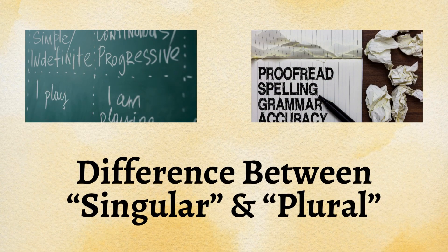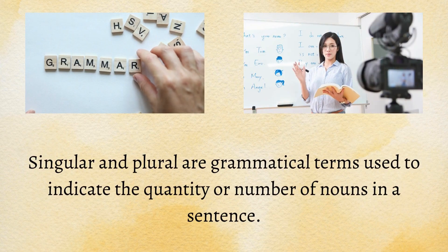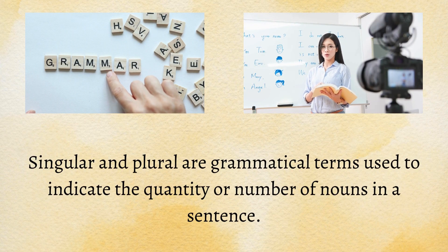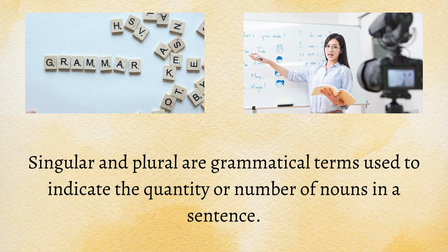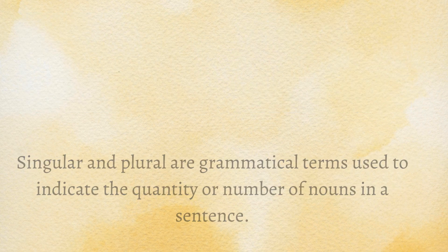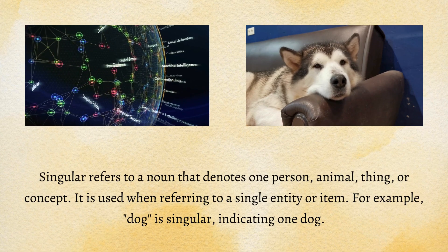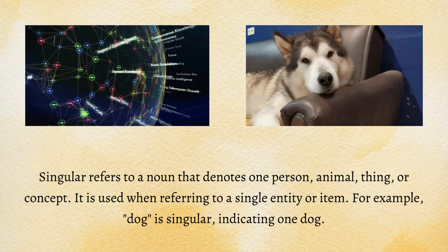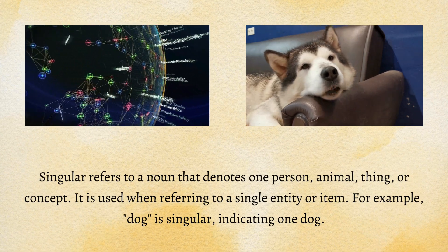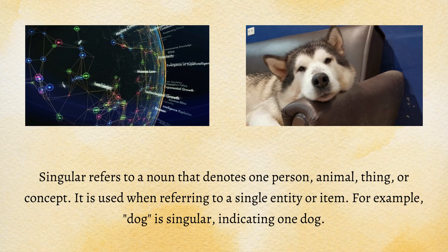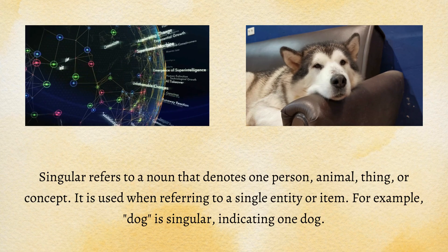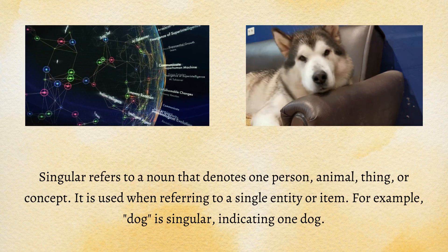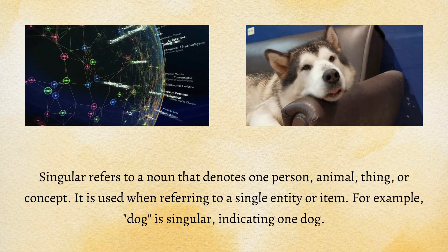Difference between singular and plural. Singular and plural are grammatical terms used to indicate the quantity or number of nouns in a sentence. Singular refers to a noun that denotes one person, animal, thing, or concept. It is used when referring to a single entity or item. For example, 'dog' is singular, indicating one dog.